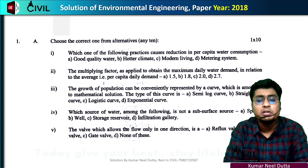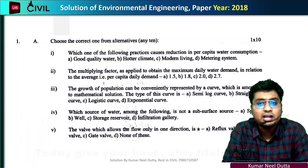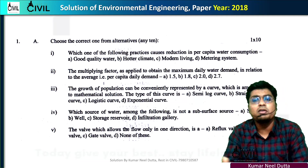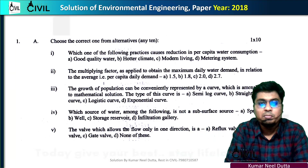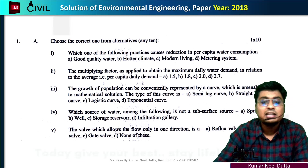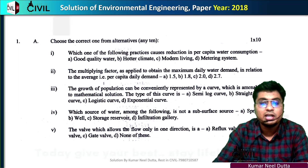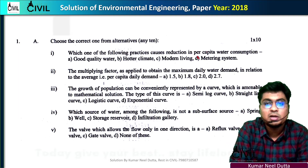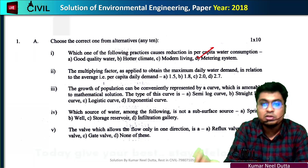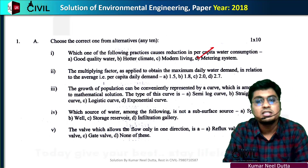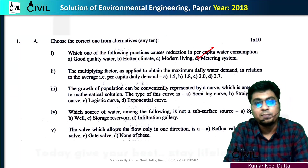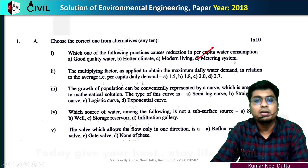If you said good quality water, they don't use the best quality water. In a hot climate, you can't fight the windfall damage, so you need to use a meter system. If we use the meter system, consumption will reduce. So the correct answer is option D.